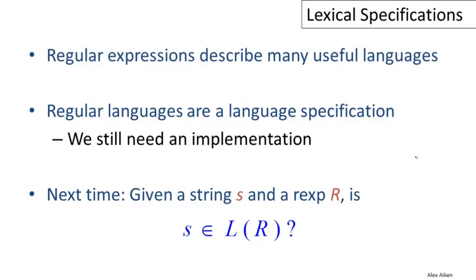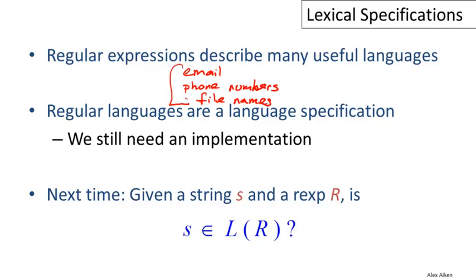To wrap up: I hope I've convinced you in this video that regular expressions can describe many useful languages. We've seen fragments from programming languages, and also that email addresses can be specified this way. Other things that are regular languages include phone numbers and file names, and there are many examples in everyday life where regular languages describe some simple set of strings. I also want to emphasize that so far we've used regular expressions as a language specification — to define the set of strings we're interested in — but we haven't said anything about how to actually implement lexical analysis. We still need an implementation, and that's what we'll talk about in future videos.